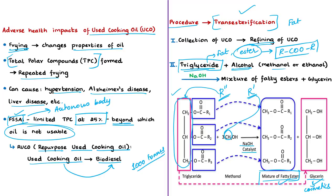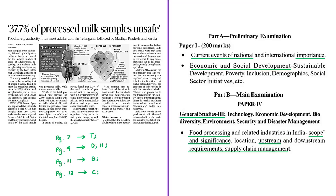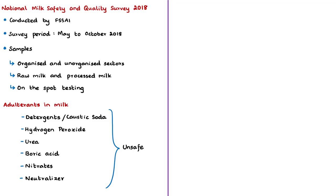Moving on to the next news article, which discusses the National Milk Safety and Quality Survey. Public confidence in the safety and quality of milk and milk products has been adversely affected by frequent reports appearing in media, including social media, highlighting large-scale adulteration of milk in the country. To assess safety and quality, FSSAI carried out a survey called the National Milk Safety and Quality Survey 2018, conducted from May 2018 to October 2018, covering all states and union territories.